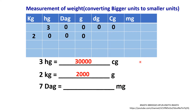Now, 7 dag (7 decagram) converted into milligrams. First, identify where decagram is and write 7 there. We are converting it to mg, so place 1 at milligram and fill the remaining boxes with zeros. Therefore, 7 decagram equals 70,000 milligrams.